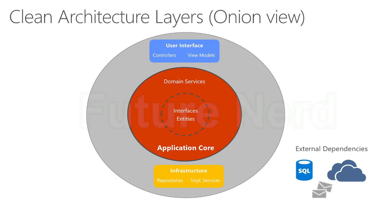In this diagram you can see that the application core is independent of every outer layer, but the outer layers — the user interface or presentation layer and the infrastructure layer — are dependent on the application core, the core layer of the application.